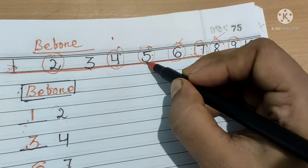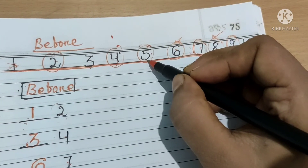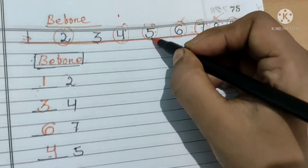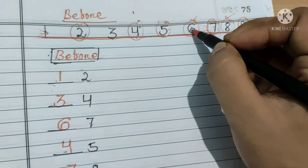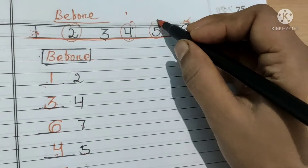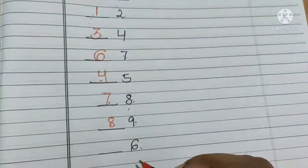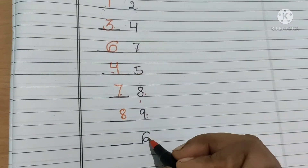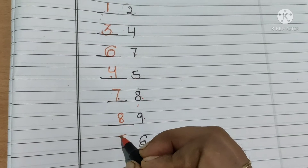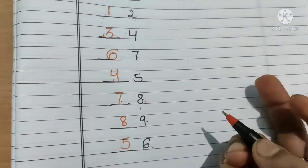So haam kya likhenge? Number 5. What comes before number 6? Number 5 comes. So haam kya likhenge? 6 se pahle number 5 aata hai, isliye haam likhenge number 5.